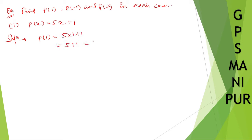p of minus 1: instead of x put minus 1, so 5 times minus 1 plus 1, which is minus 5 plus 1 equals minus 4. Simple.